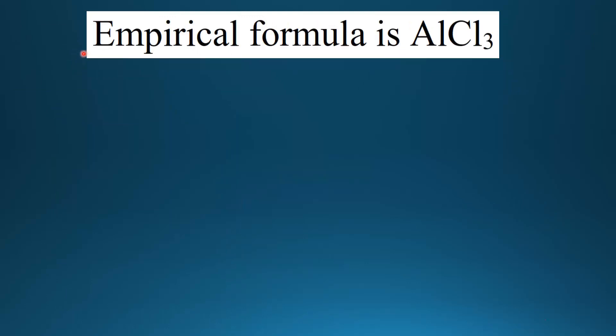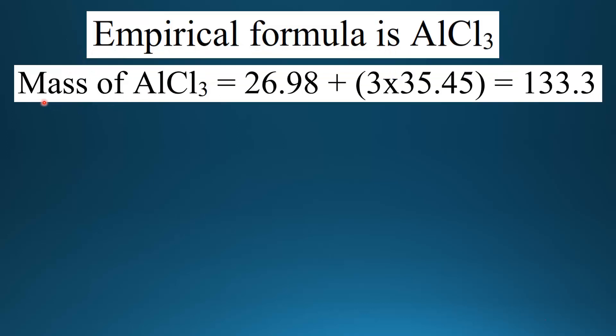Next we'll calculate the molecular formula. The empirical formula is AlCl3. We find the mass of AlCl3: 26.98 plus 3 times 35.45. That gives us a mass of 133.3.